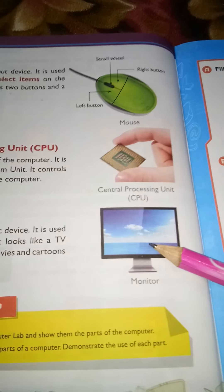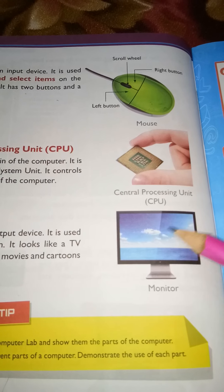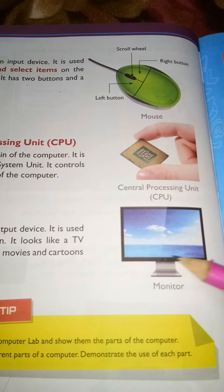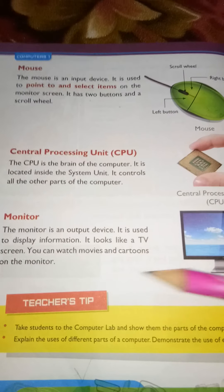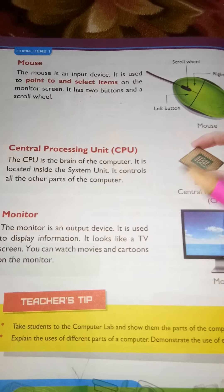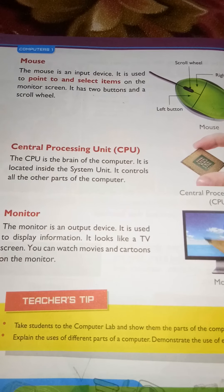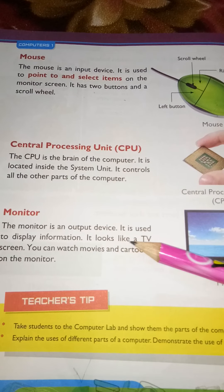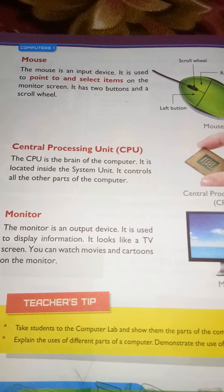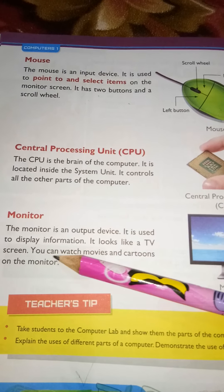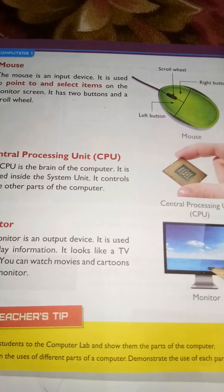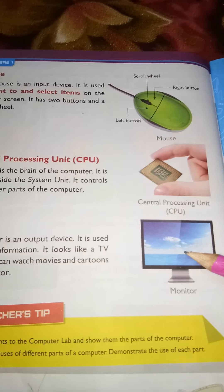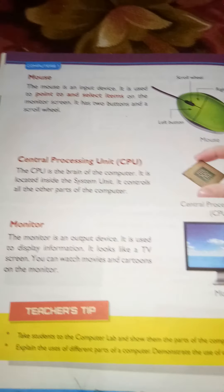Now, monitor — look here, this is a monitor. The monitor looks like a television. The monitor is an output device. It is used to display information. It looks like a TV screen and you can watch movies and cartoons on the monitor.